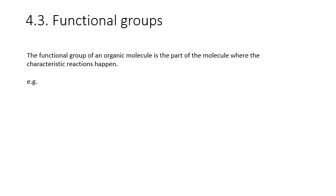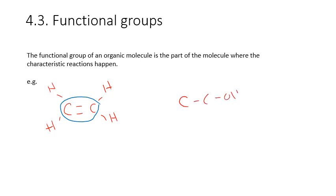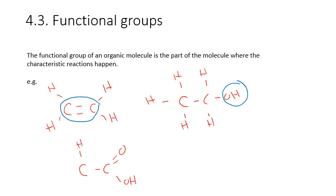Functional groups are something you'll understand better once you've studied more organic chemistry. A functional group is a collection of atoms within a molecule that represents the area where most of the characteristic reactions of that homologous series happen. For example, in the alkenes, the functional group is the carbon-carbon double bond. In alcohols such as ethanol, the functional group is the OH group on the right-hand side. For carboxylic acids, the functional group is the C double bond O, single bond OH — it is this end of the molecule where the characteristic reactions of carboxylic acids occur.